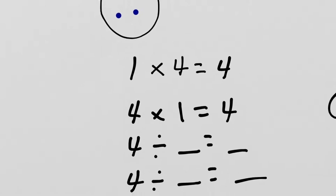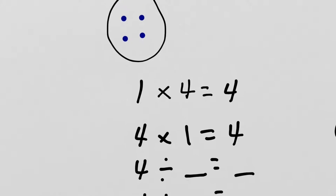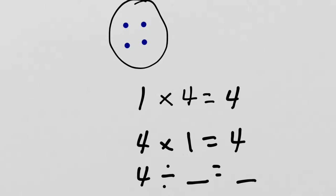I can also find related division expressions. So, the first one, if I have four items and I divide it into one group, the turnaround, the related division would be 4 divided by 1 equals 4.